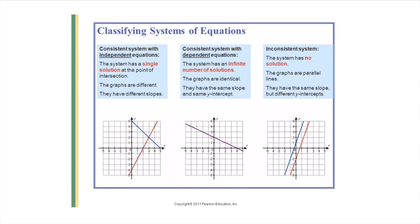There are three different things that can happen with a system of equations. The most likely one is the first: two lines that intersect at a point, giving a single solution.